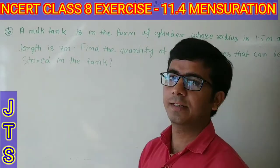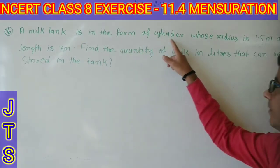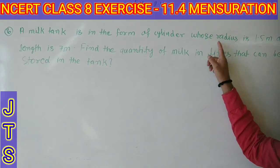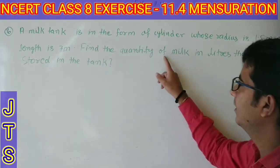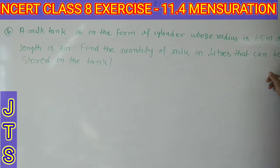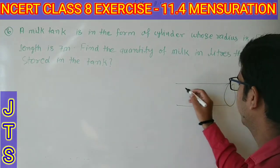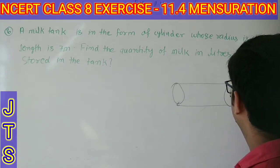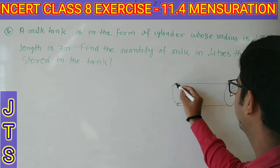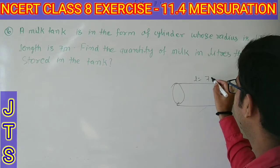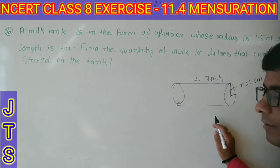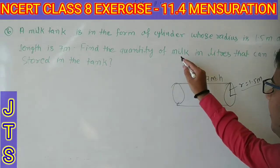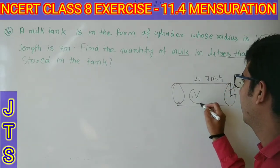Question number 6: A milk tank is in the form of a cylinder whose radius is 1.5 meter and length is 7 meter. Find the quantity of milk in liters that can be stored in the tank. एक milk tank है जो cylinder के form में है, इसका radius 1.5 meter और length 7 meter दिया हुआ है।